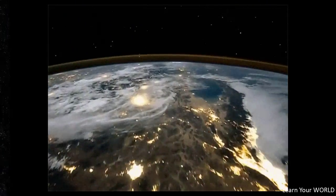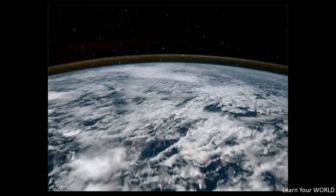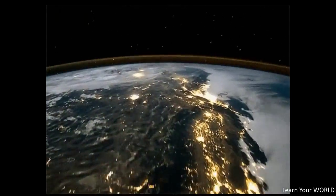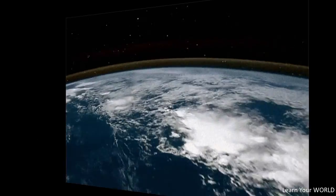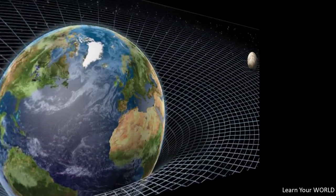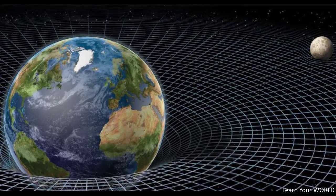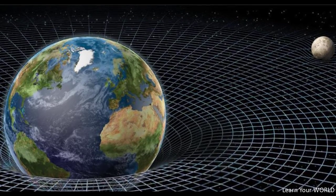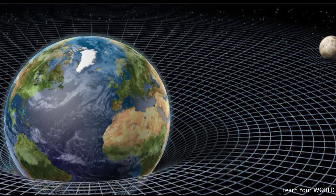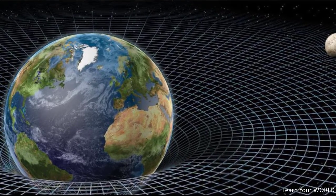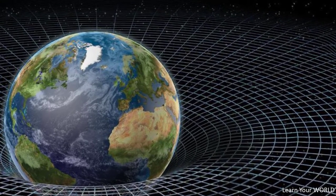All the objects in the universe take place in the structure we call space-time fabric. You can think of it as a huge sheet like in the image. Each mass bends different points of that sheet in direct proportion to their mass — imagine putting a dumbbell or bowling ball on a stretched sheet; the sheet will bend down.